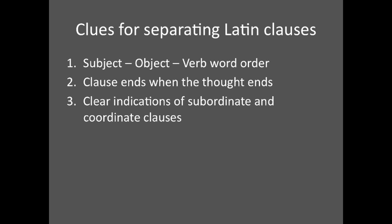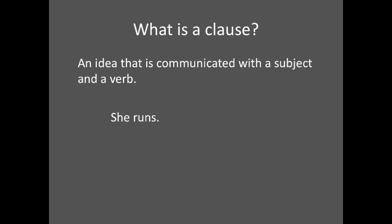So what are subordinate clauses and coordinate clauses? First, what is a clause? A clause is an idea that is communicated with a subject and a verb. In English, we need two words for this: 'She runs.' She is the subject and runs is the verb. In Latin, this can be one word: currit. There can be multiple clauses in one sentence.